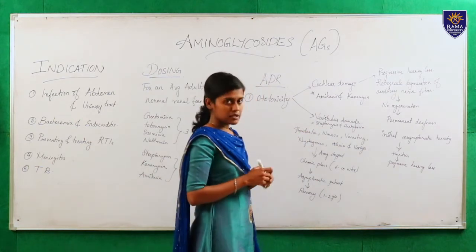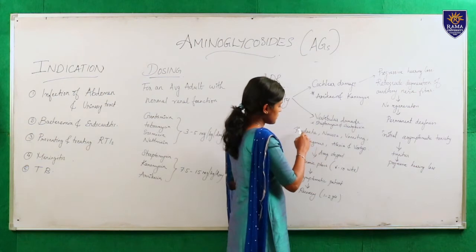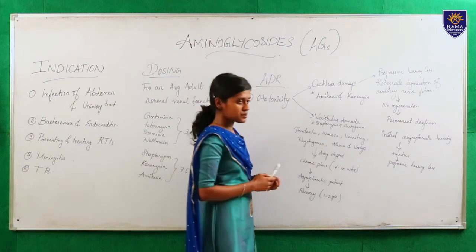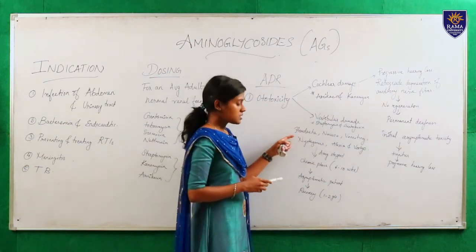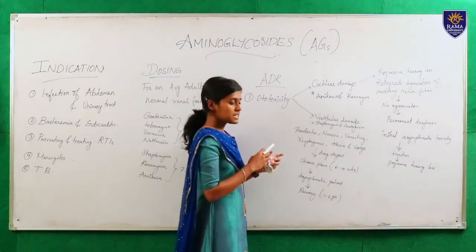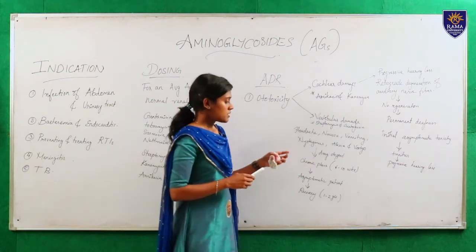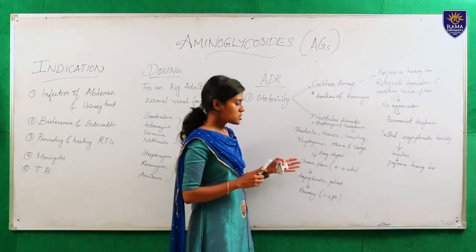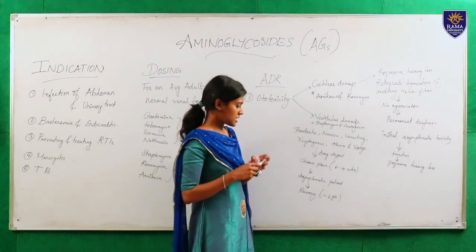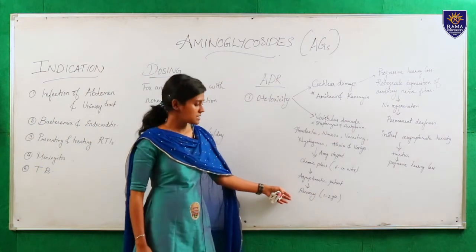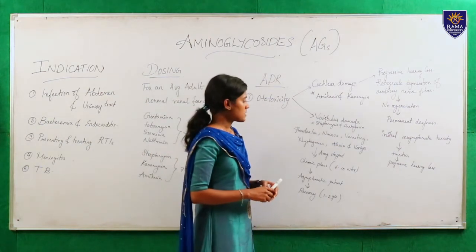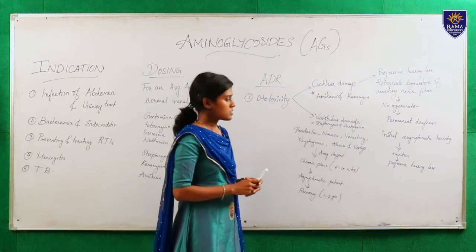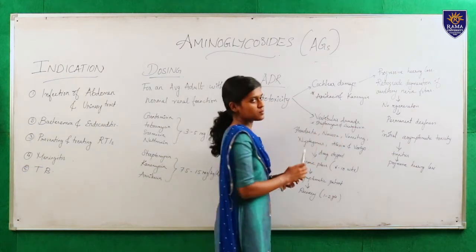Next is vestibular damage. The patient shows headache, nausea, vomiting, nystagmus, ataxia and vertigo. When the drug is stopped at this stage, the patient goes on to the chronic phase, which lasts about 6-10 weeks. During this phase the patient may be asymptomatic while lying down and may show symptoms while awakening. Recovery may be incomplete and can take 1-2 years. Amikacin and kanamycin show most cochlear damage, while streptomycin and gentamycin show vestibular damage.